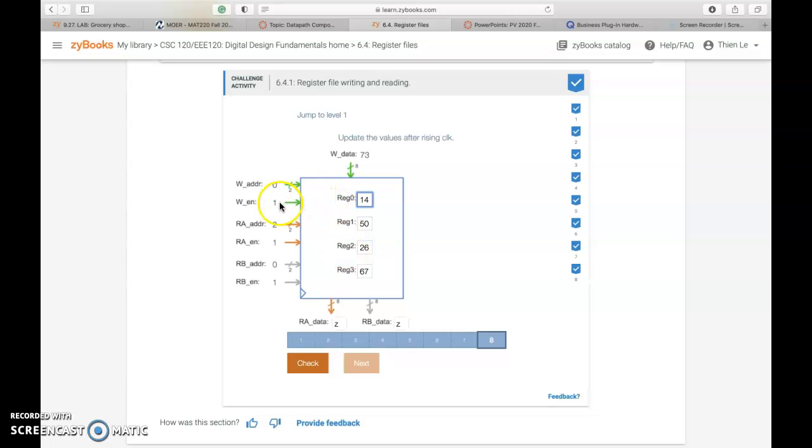For the next one we see three enables. We have to change register 0 for 73, which is that. And then we see that the RA is enabled at register 2, so we put in 26. And then for the RB we're using 0, which the number just changed, so we use the new change number.